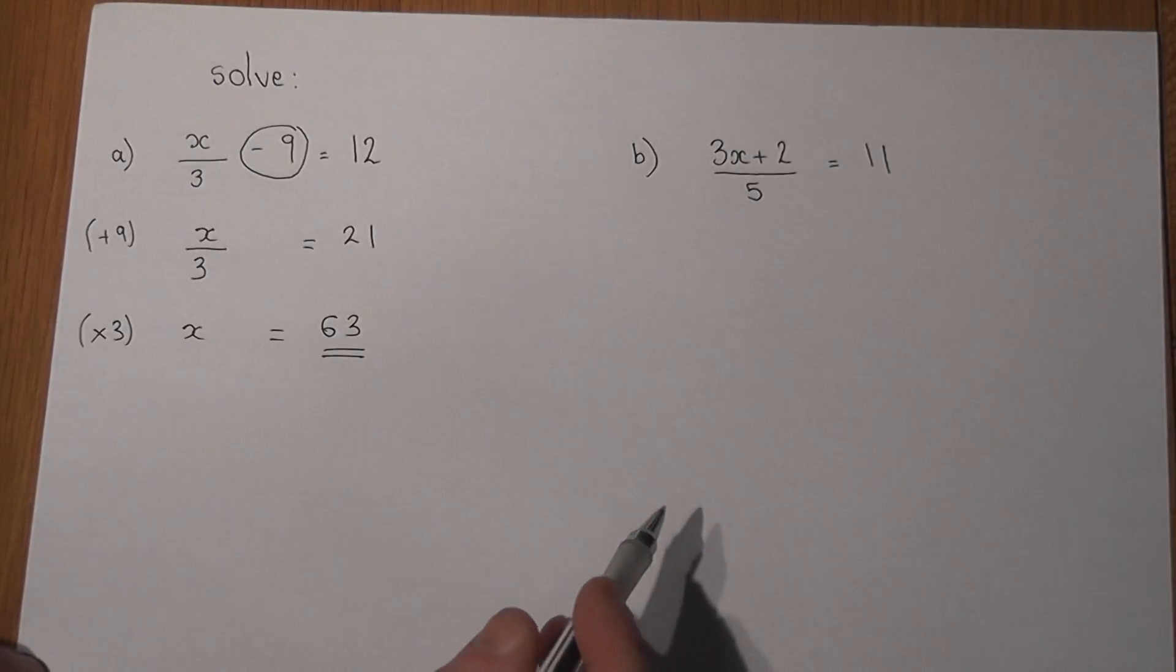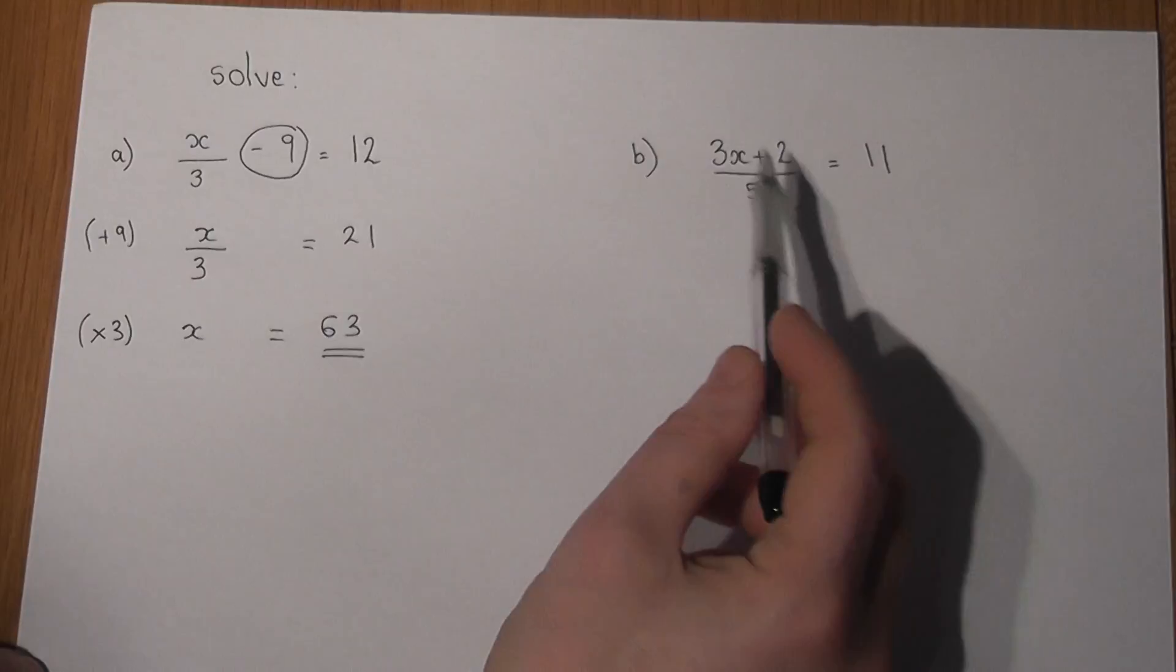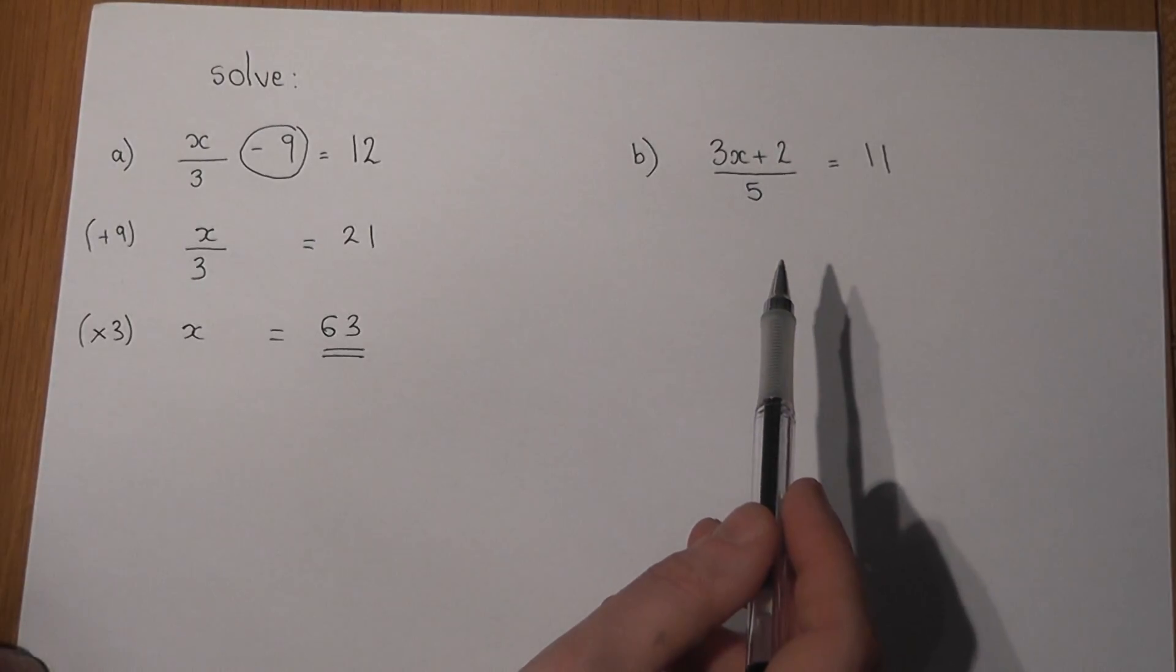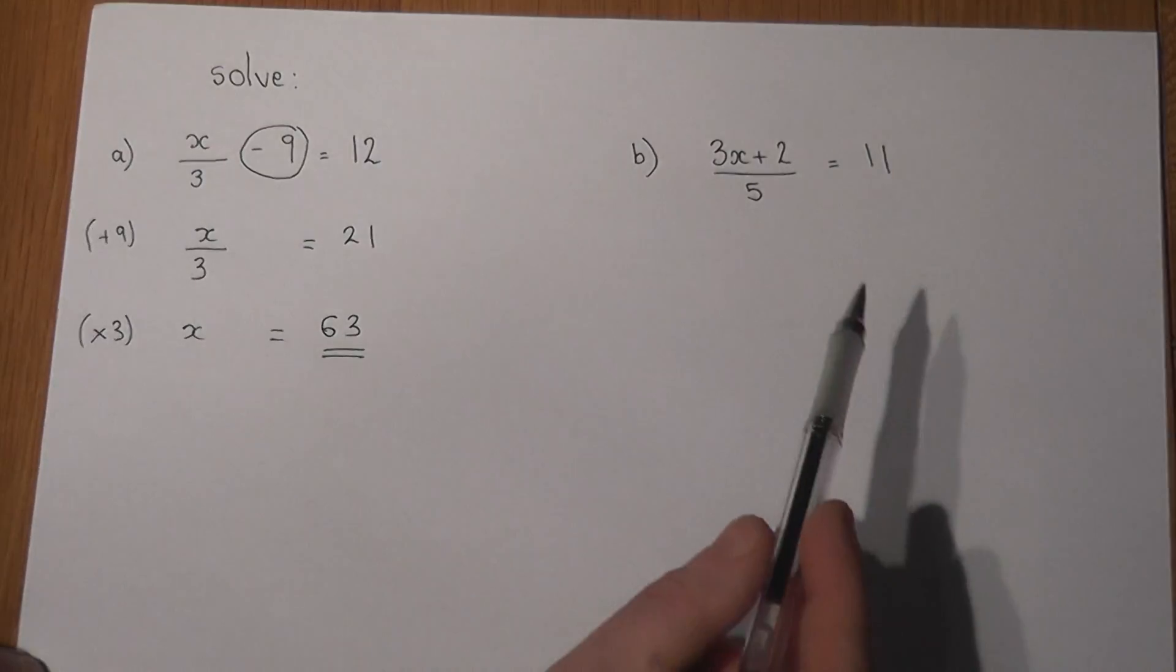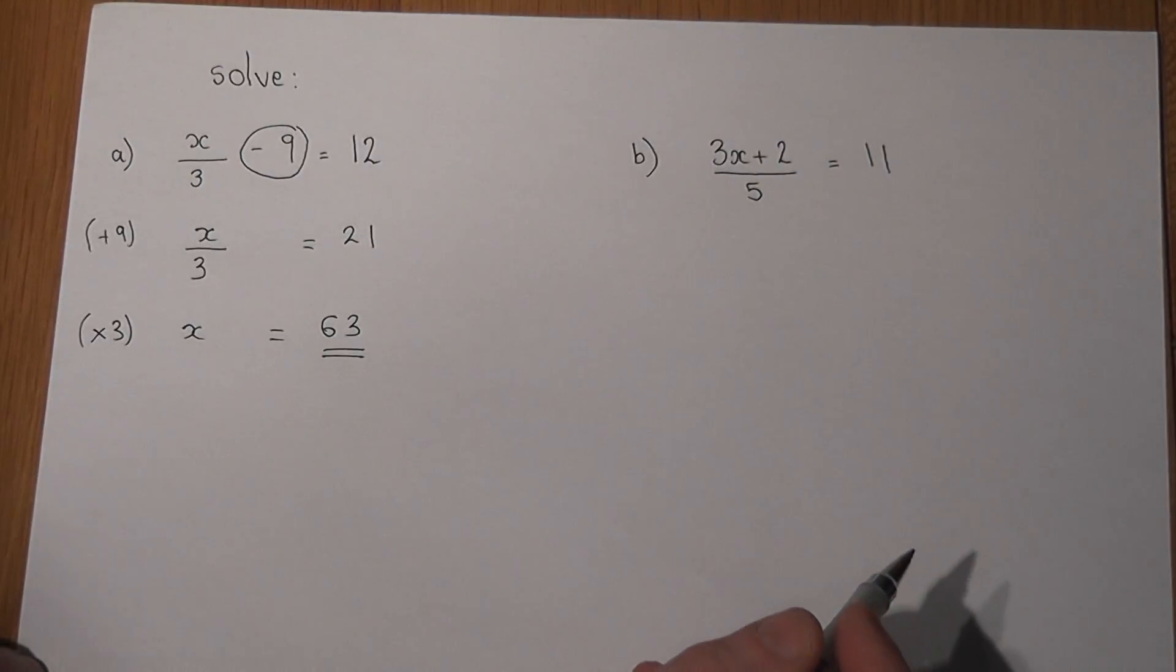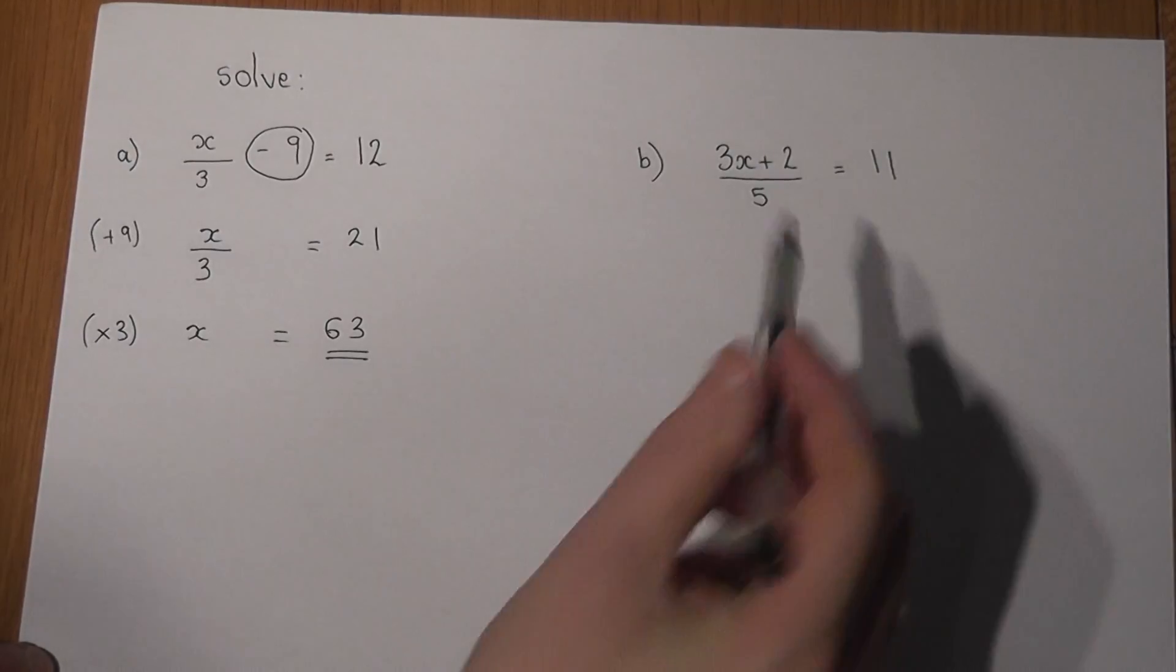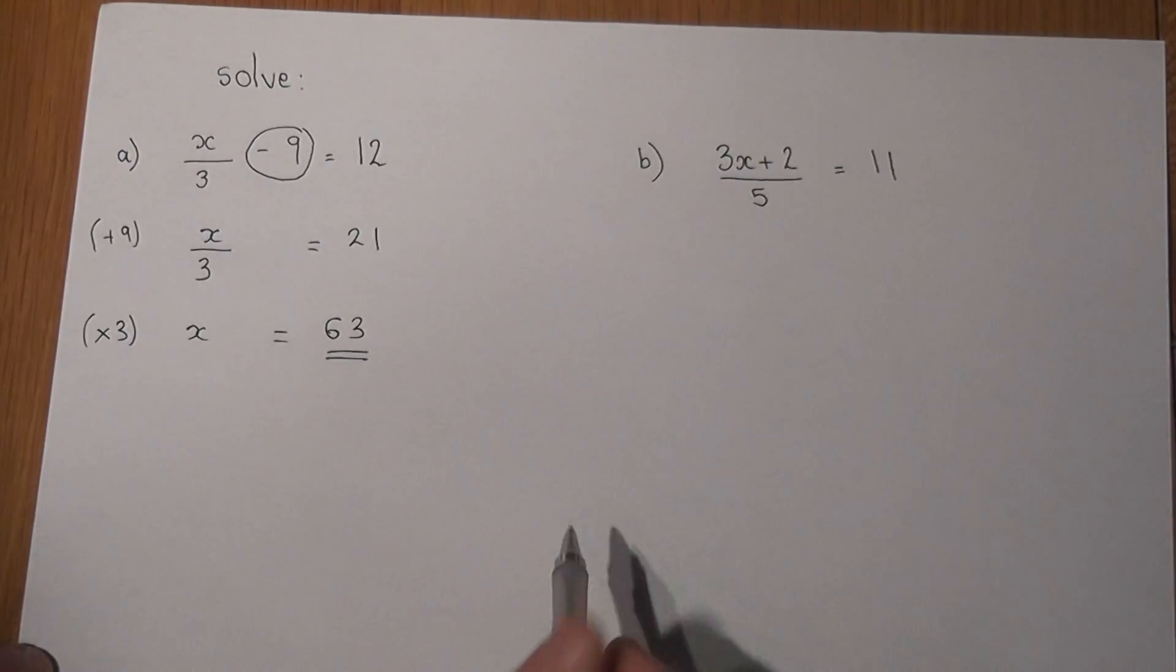Now in example two we've got 3x plus 2 all over 5. We've not got this separate integer to one side of the equation. In this case we times first of all to cancel off the big over 5, so in this case I would times by 5 to begin with.